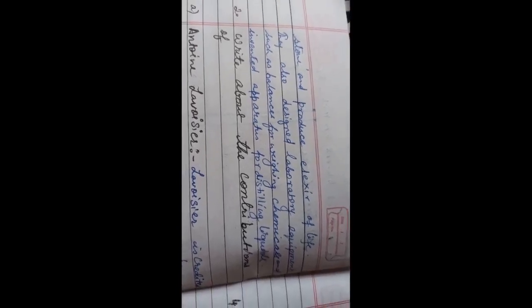Write a note on alchemy. You can write: Alchemy was an early philosophical and spiritual field of study that integrated chemistry with metal work. The people who practiced alchemy were called alchemists. Their work contributed in laying foundation of modern chemistry and medicine. Its physical aspect was the experimental study of transformation of base metals into gold. It aimed at finding philosopher's stone and produced elixir of life. They also designed laboratory equipments such as balances for weighing chemicals and invented apparatus for distilling liquids. This much you will write.